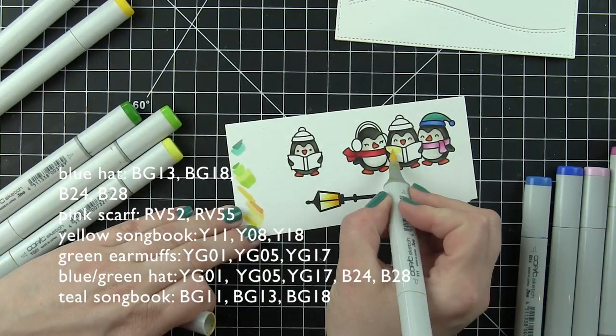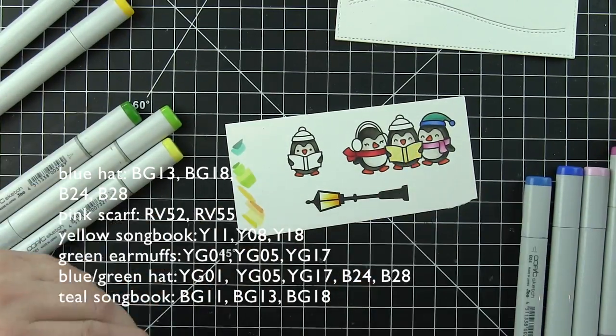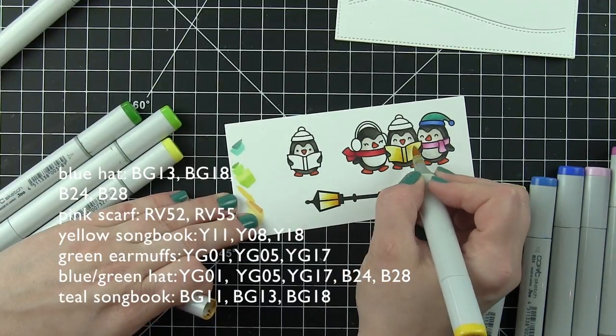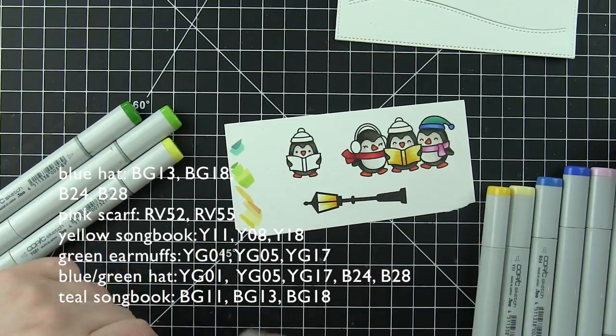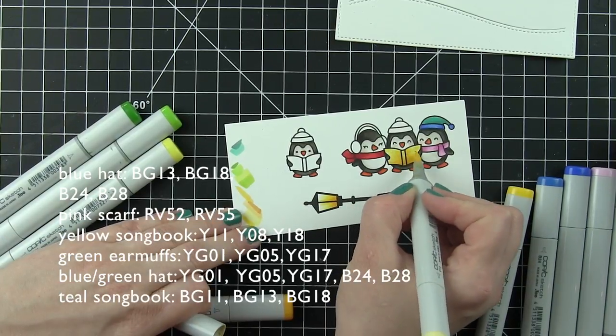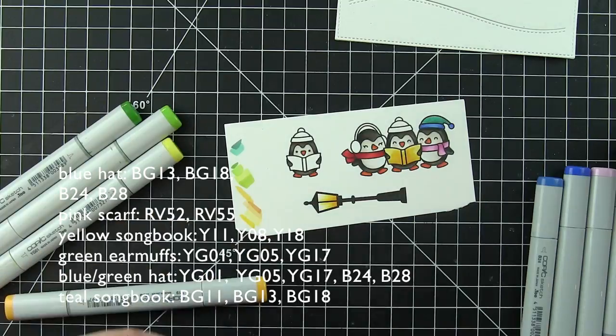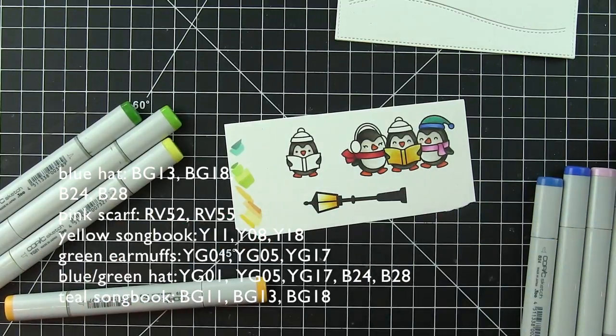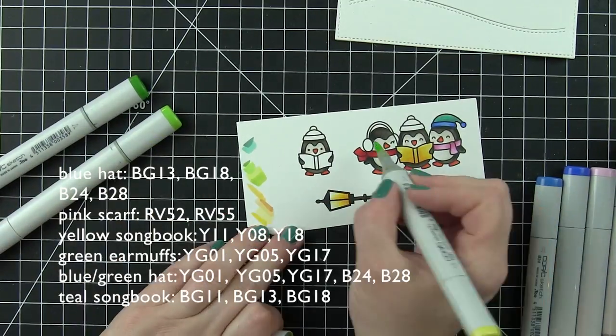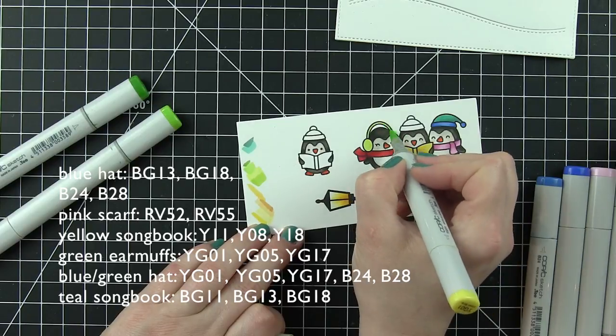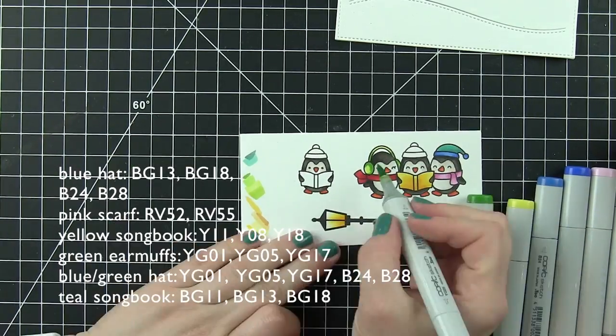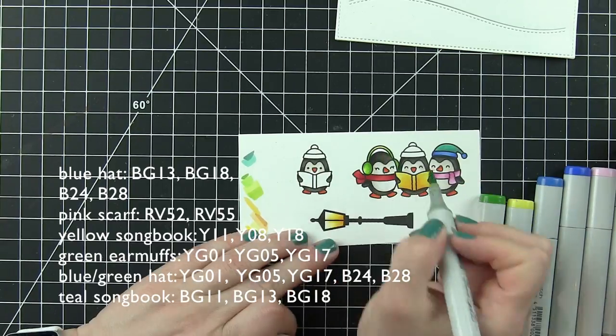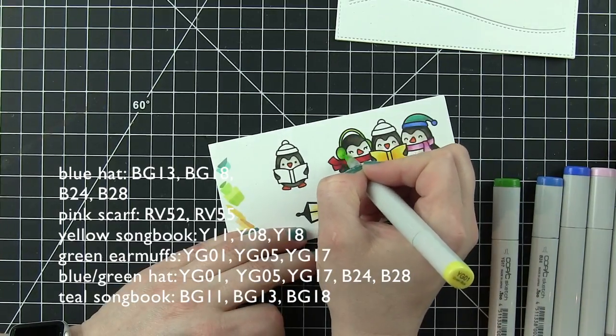Any of the additional accessories I'm coloring are all listed here along the left and bottom of the screen. I tried to list them out as I colored, starting with that blue hat on the right of the screen, the pink scarf, the yellow songbook. I'll go on to the green earmuffs here in a little bit, and then the blue-green hat and the teal songbook. Basically, just wanted these to be really bright and fun. In my mind, I was thinking rainbow colors. They're not going in rainbow order or anything like that, but I wanted this to be super bright and fun.